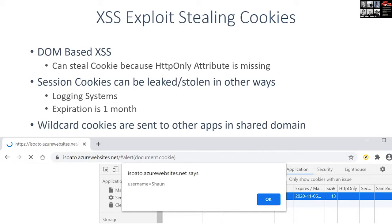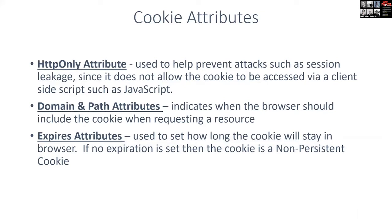Wildcard cookies are risky because they're sent to everything that matches that domain. The browser looks at the domain of a cookie and decides when and where to send it. If you have a shared site with multiple subdomains and multiple applications, you want to make sure you're setting that domain attribute. The reason the cross-site scripting exploit worked is because the cookie did not have the HttpOnly attribute set, meaning JavaScript was able to access it. Simply setting that attribute is one effective way to prevent this type of attack.